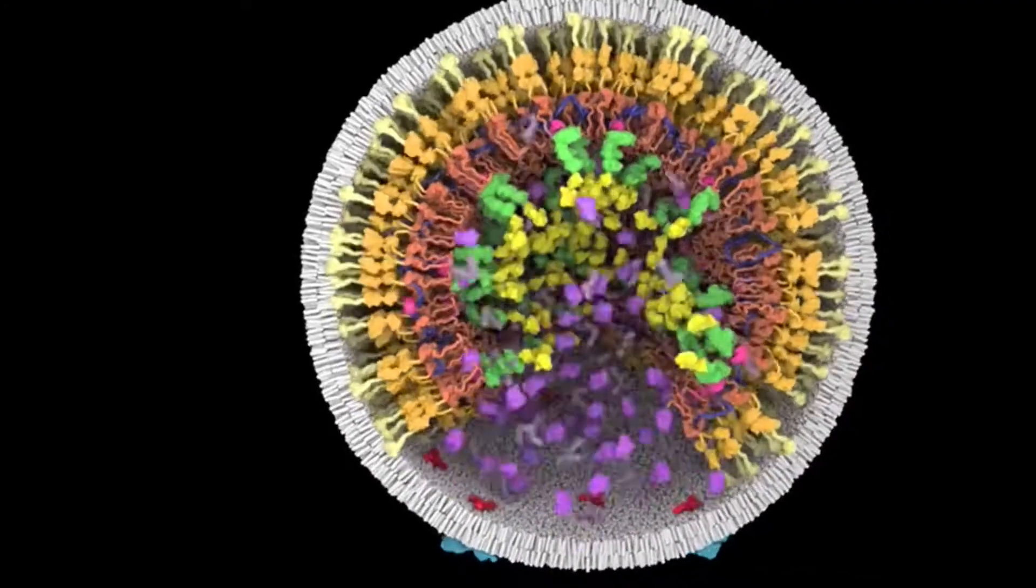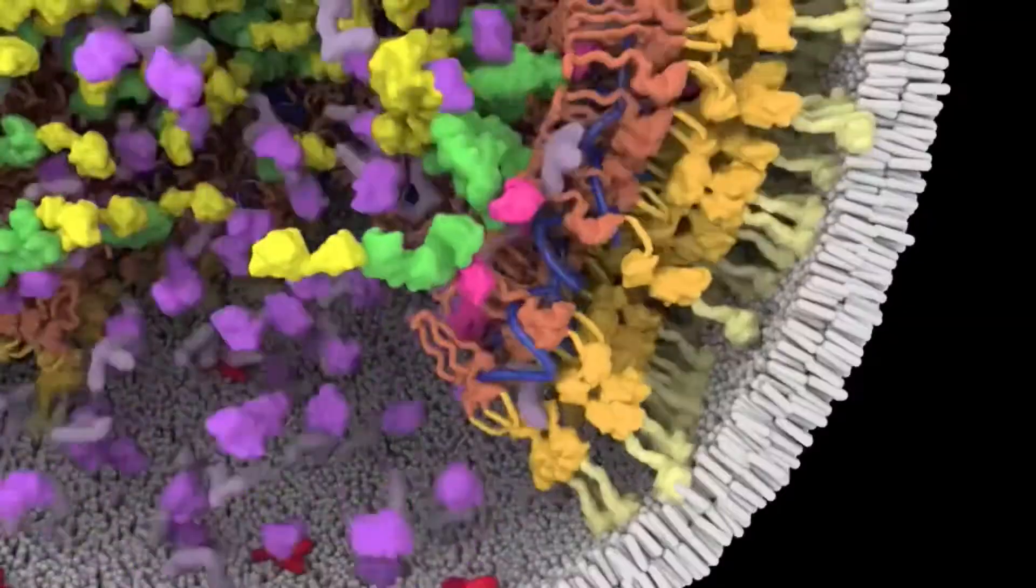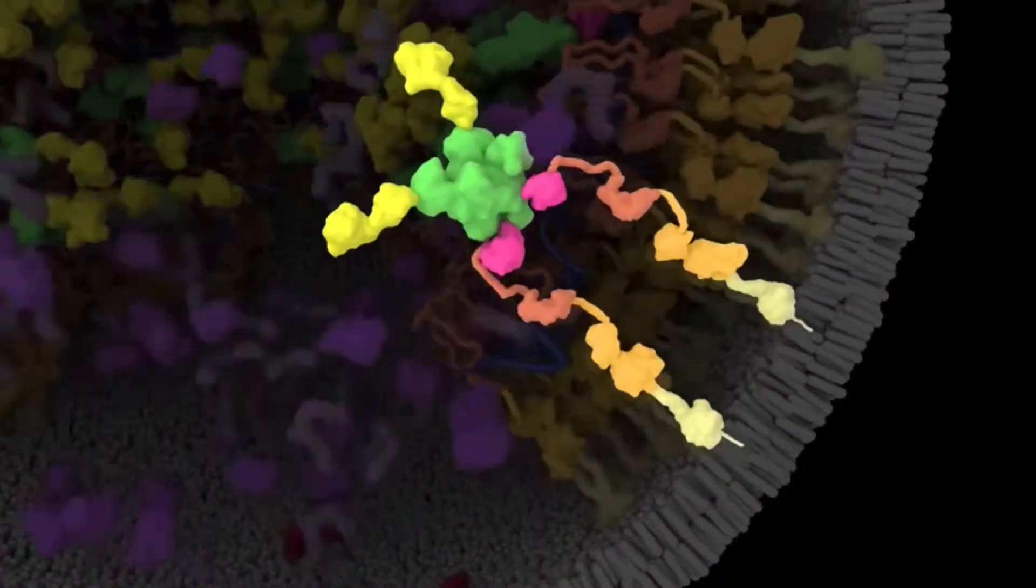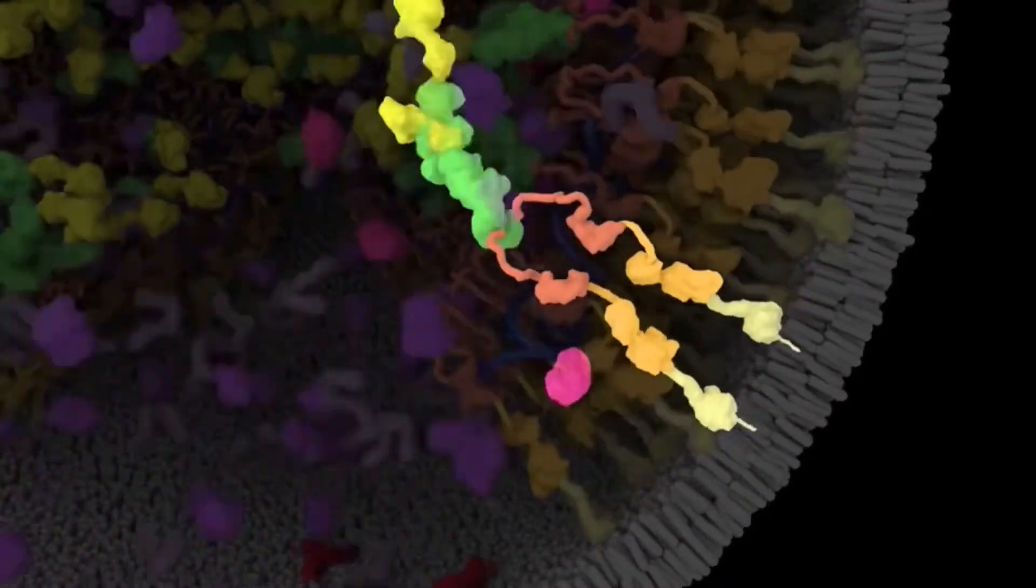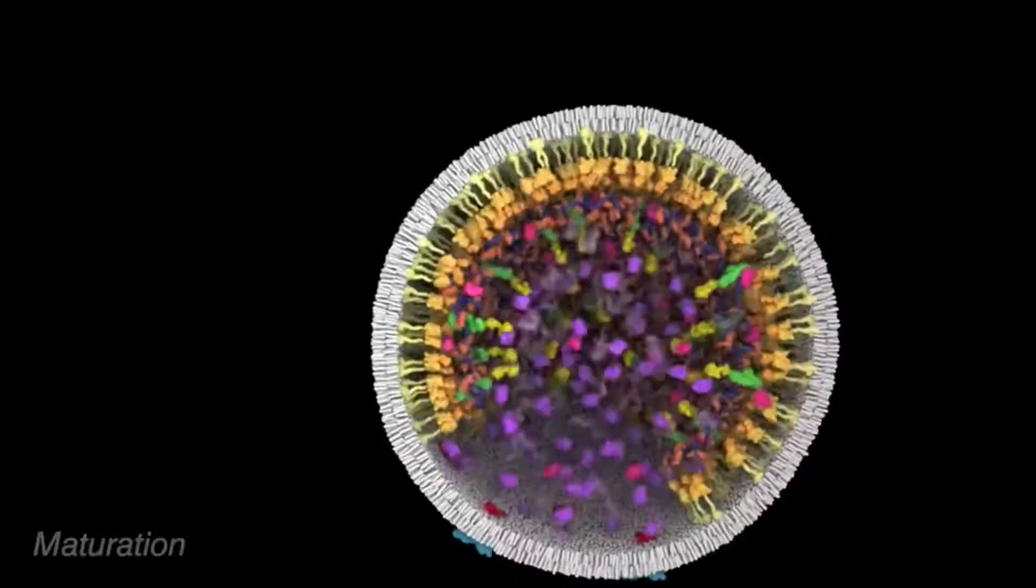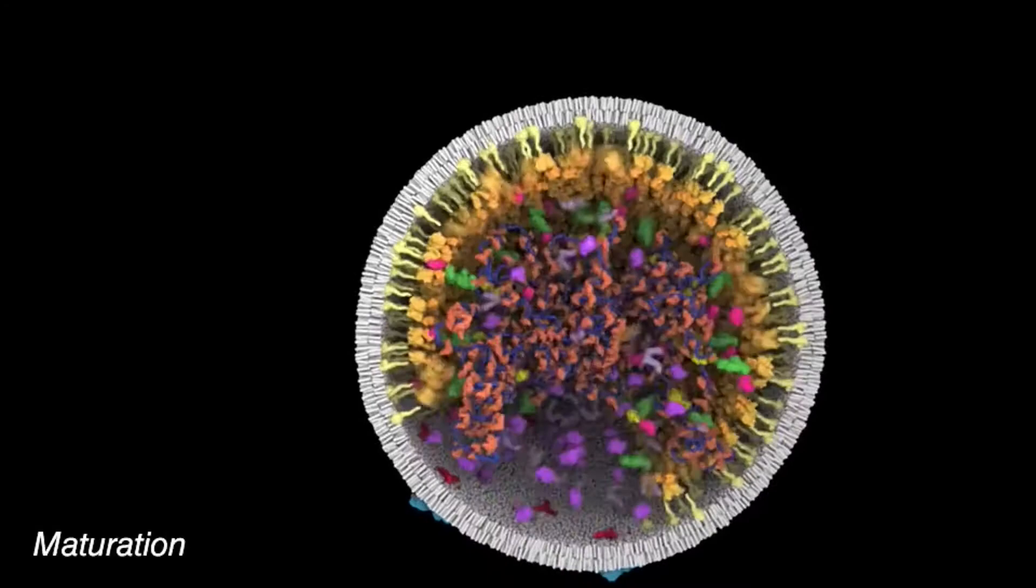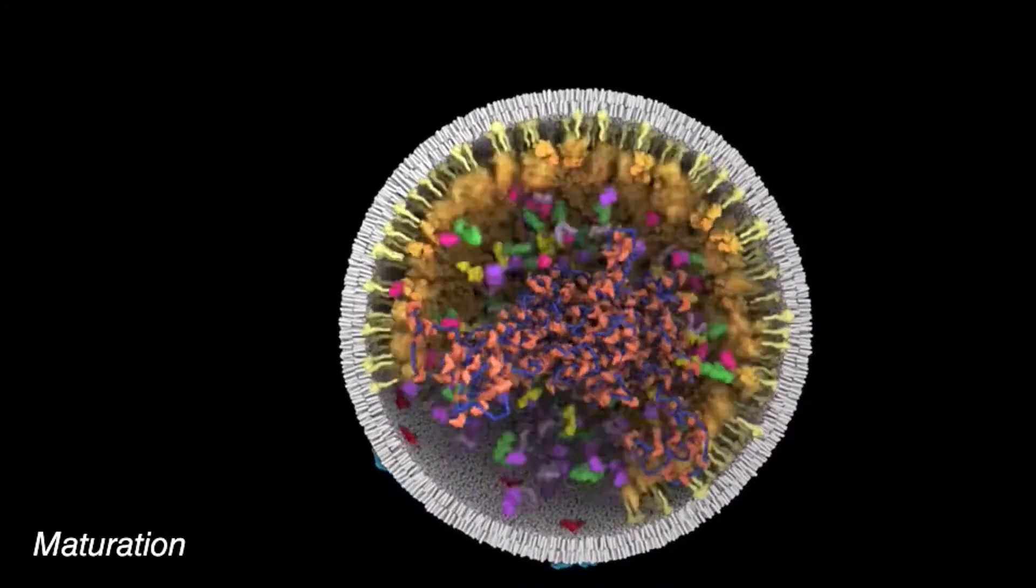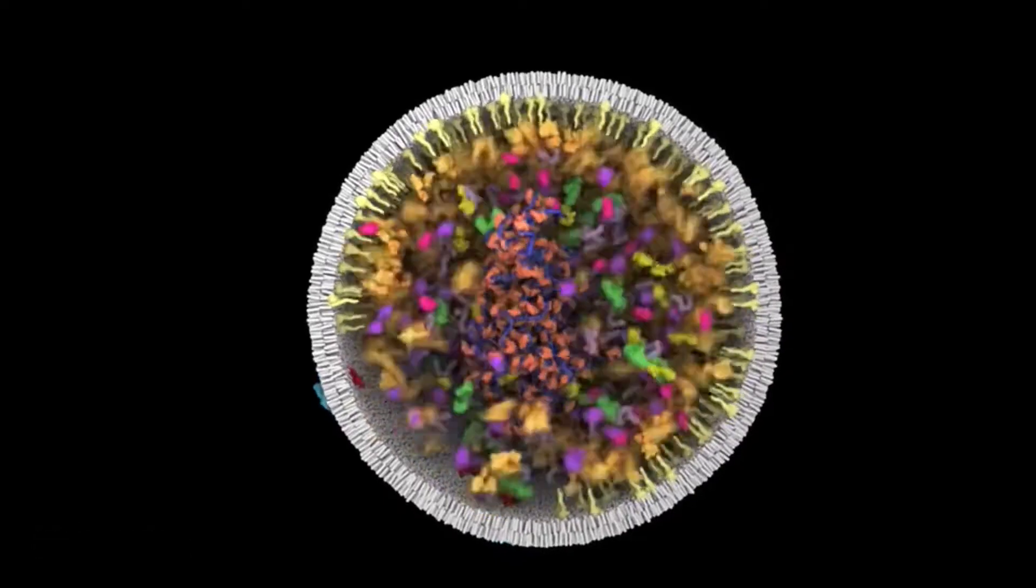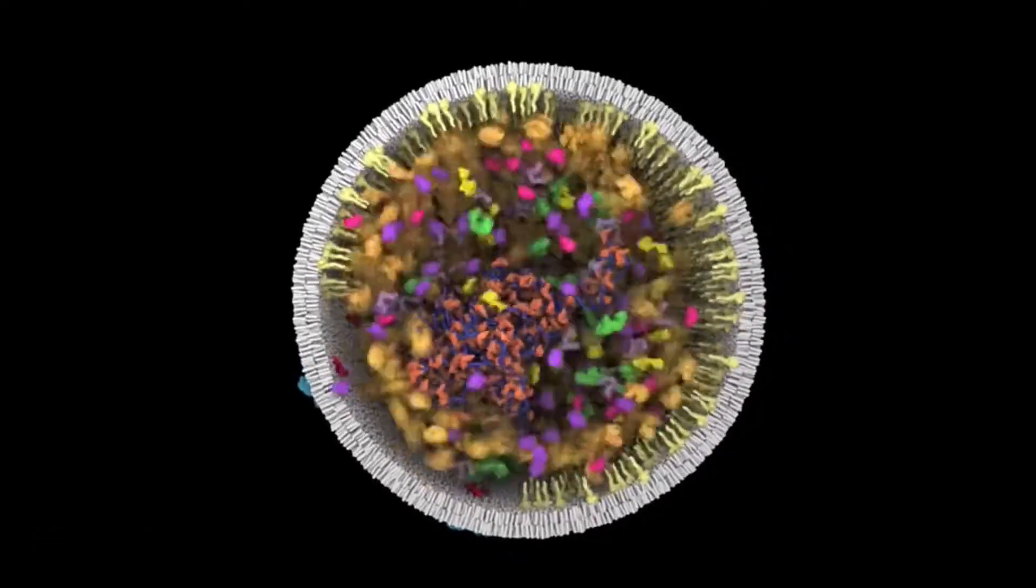Once released, the new virus rapidly undergoes a process known as maturation. Maturation is triggered by the dimerization and release of proteins known as protease, shown in pink, which act as molecular scissors, cutting the GAG protein at specific sites to release shorter proteins, including nucleocapsid proteins that go on to bind and compact the viral RNA, and capsid proteins that form a conical shell around the RNA.